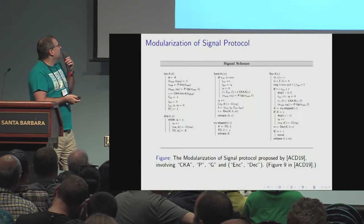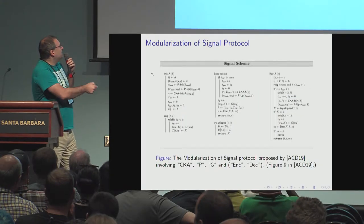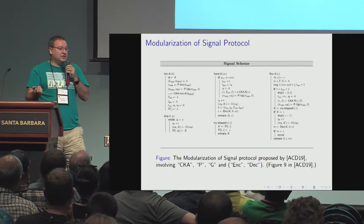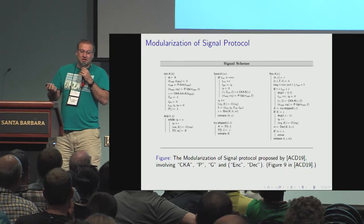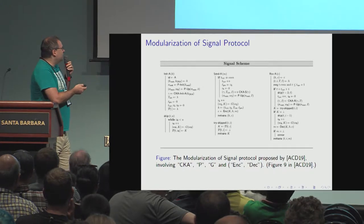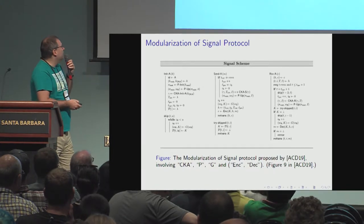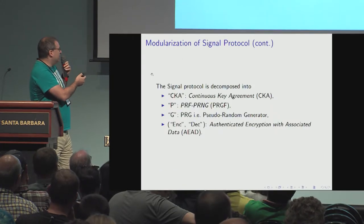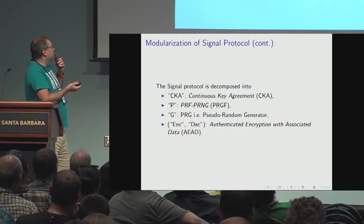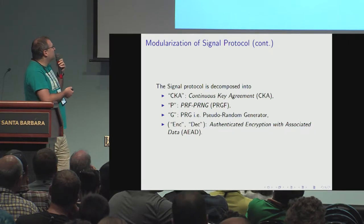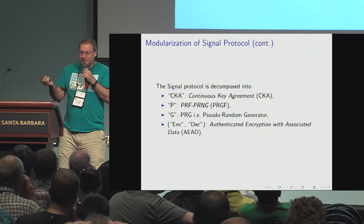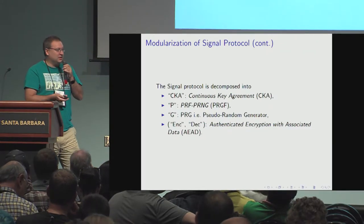For example, you can get post-quantum Signal. This is our generalized Signal — it looks kind of long, but it's really not that hard. It's intuitive; you can teach it in class. Arguably, compared to the original Signal, it's much, much simpler. There are various natural and simple modules: something called continuous key agreement, a pseudorandom function generator (which is a fancy hash function), a standard pseudorandom generator or stream cipher, and authenticated encryption. From these pieces, in a pretty clean way, you get generalized Signal, of which existing Signal is a special case.